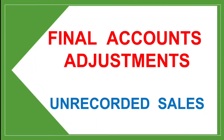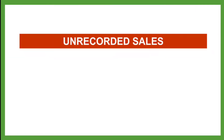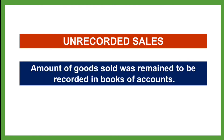Welcome to Anjali Upadhyay's YouTube channel. We will discuss an adjustment on Unrecorded Sales in Final Accounts. Let me first explain what Unrecorded Sales means. It refers to an amount of goods sold that remained to be recorded in the Books of Accounts — meaning goods are sold on credit but no entry is made in the Books of Accounts.